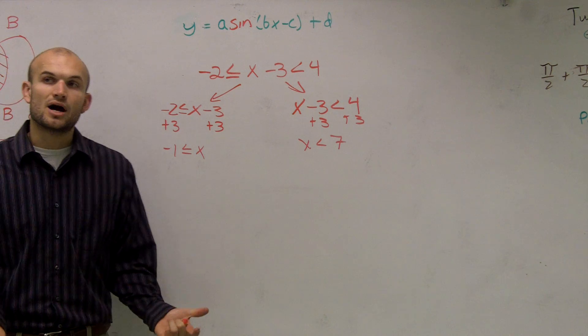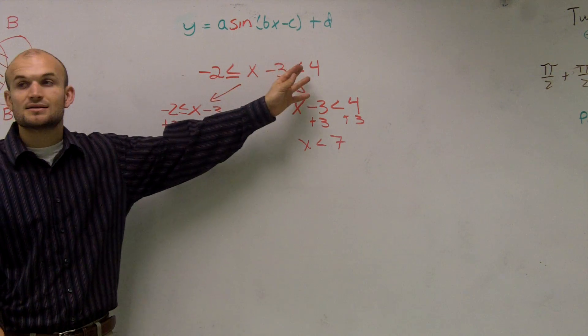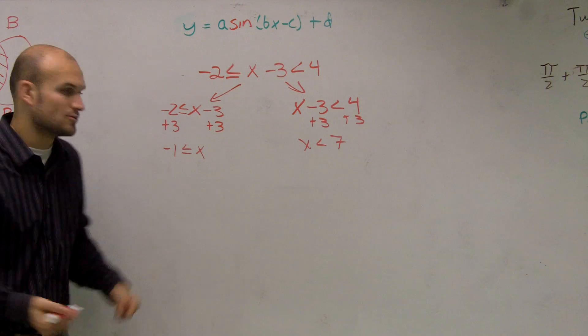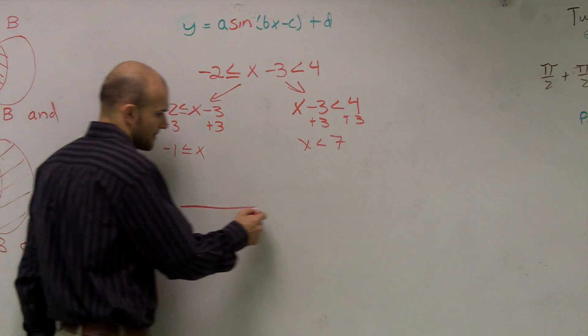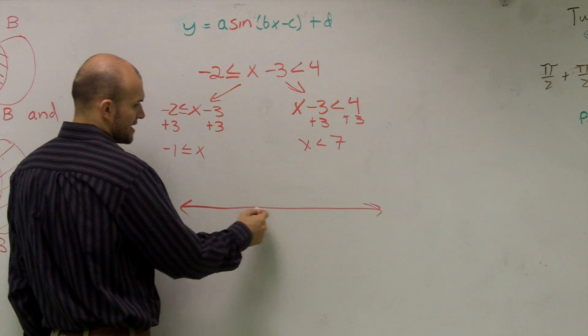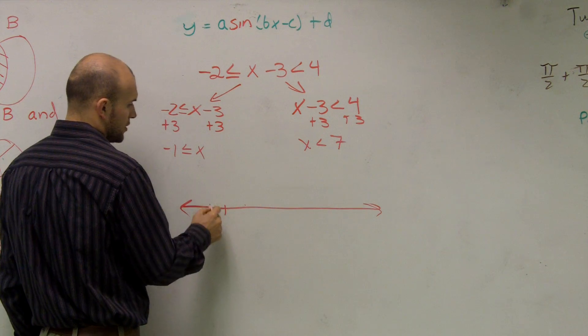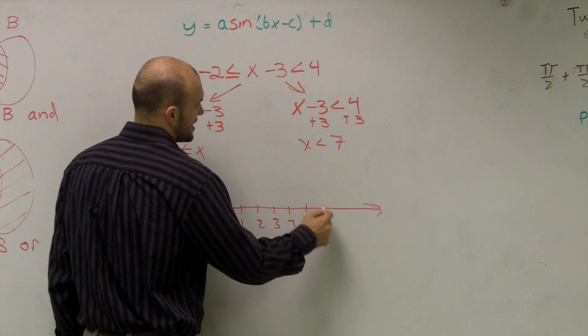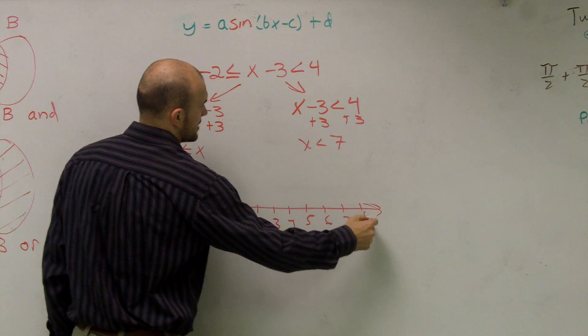One thing you guys can tell is when your inequality signs are going in the same direction, it's going to be an and statement. And you guys will see why it's going to be an and statement. Negative one, zero, one, two, three, four, five, six, seven, eight.